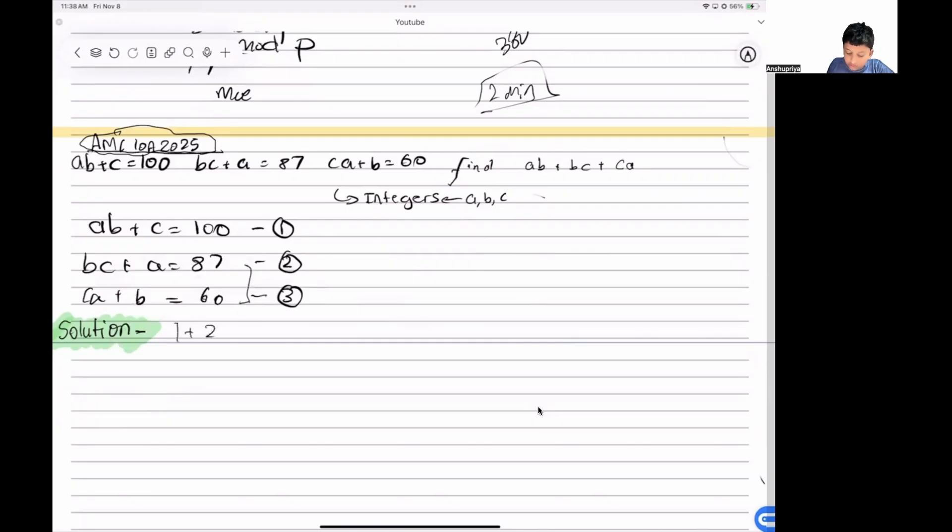We will do 1 plus 2. What will we get? ab + bc + ca plus c + a. This we can factorize as (c + a)(b + 1).